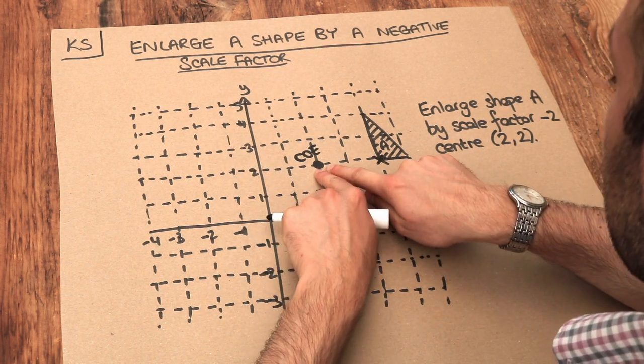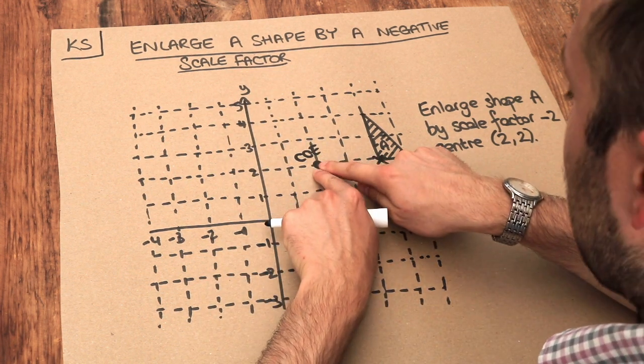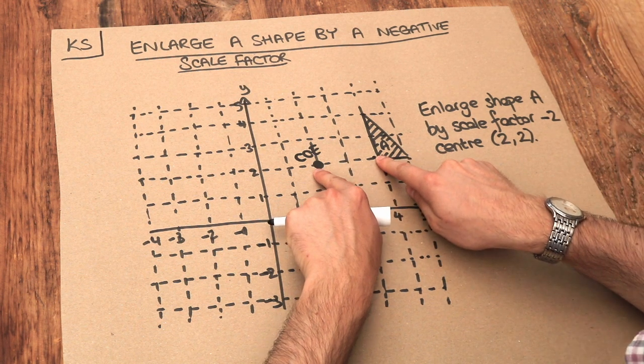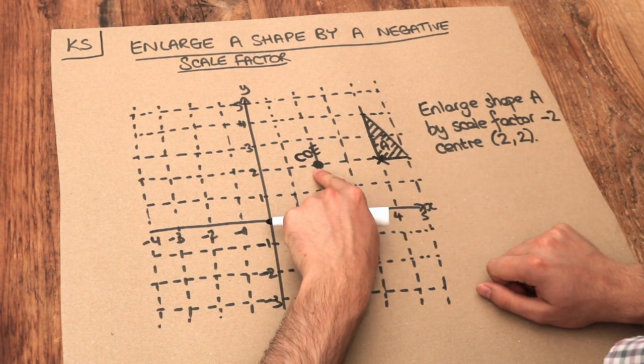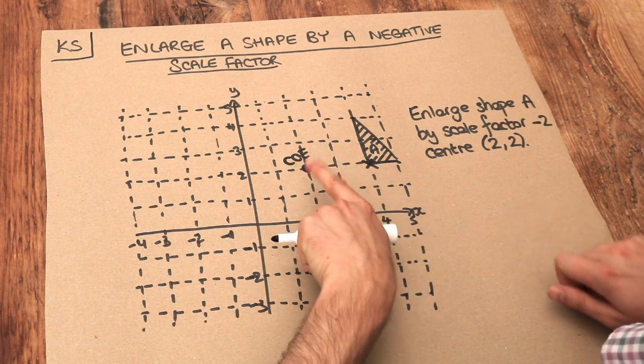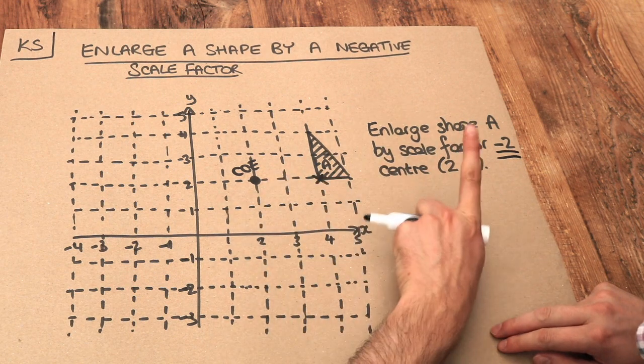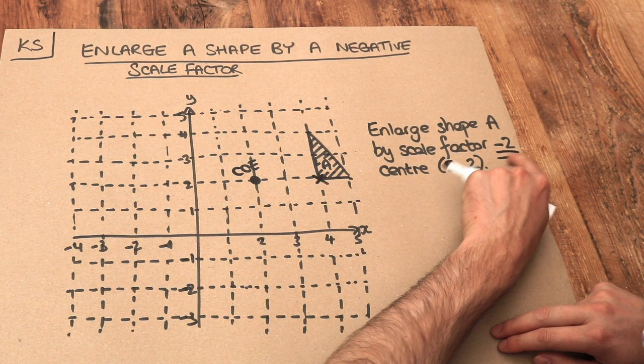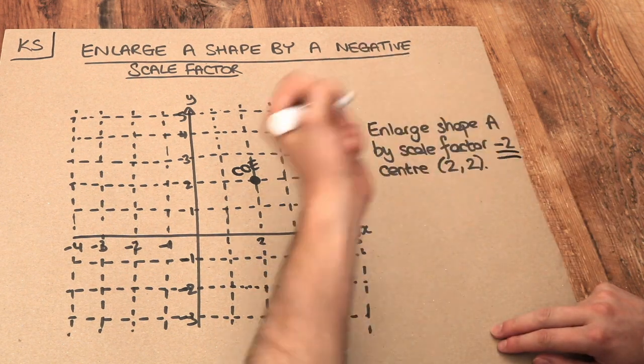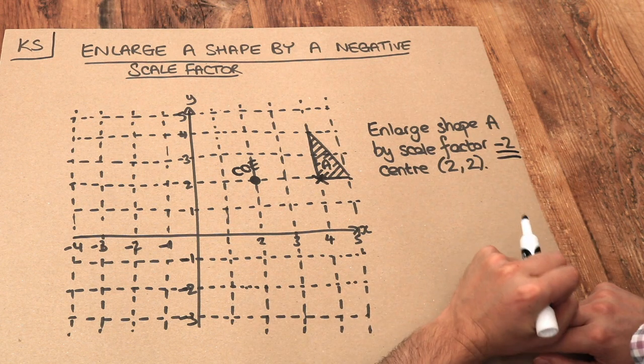We always count from here and go to that point. So we can see that's 2 squares to the right from the centre of enlargement. Now if we take that 2 right and multiply it by this scale factor here, 2 multiplied by minus 2 gives you a negative number because positive times negative is negative and it's going to be minus 4.